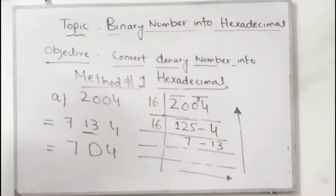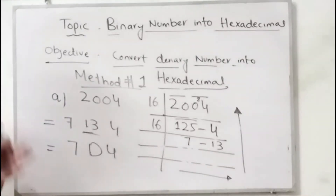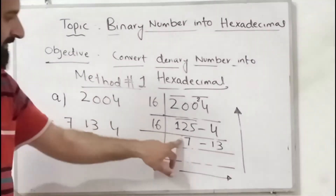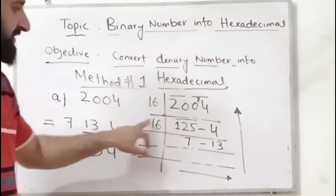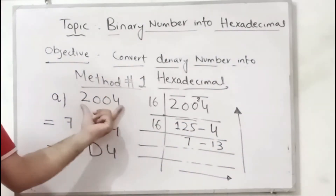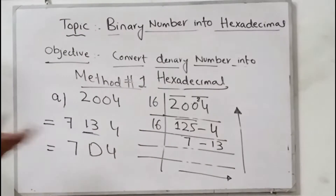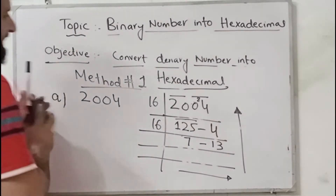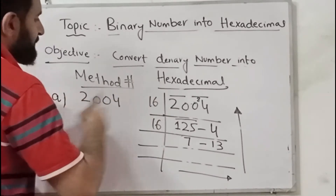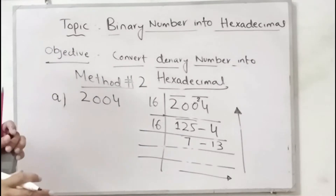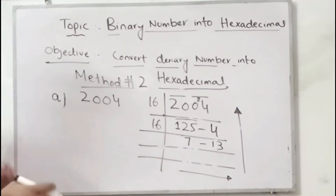Method Number Two involves placing hexadecimal values in the appropriate positions. I am going to show you an interesting trick. When you multiply 16 with 7, 16 with 13, and 16 with 4, it will give you the hexadecimal value. Let me show you how. This is Method Number Two — you need to place the hexadecimal digit in the appropriate position.